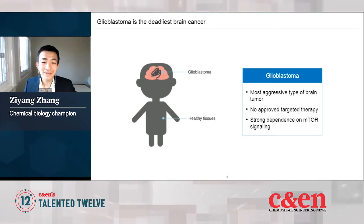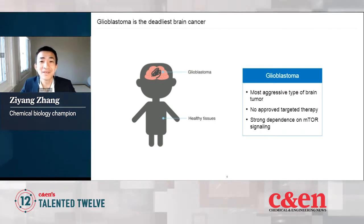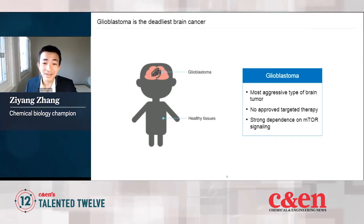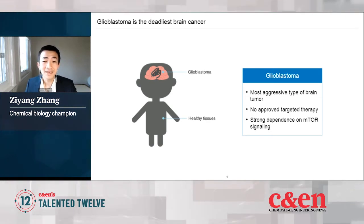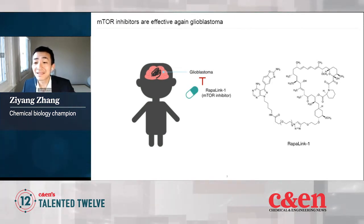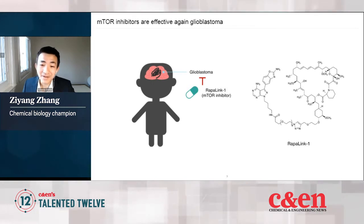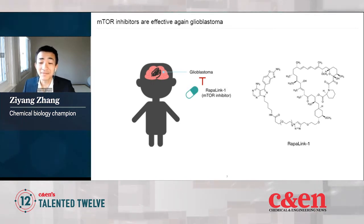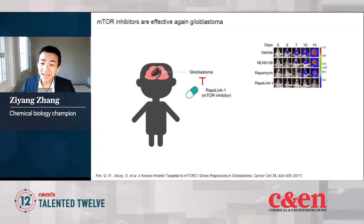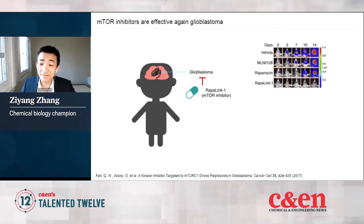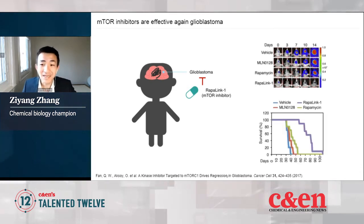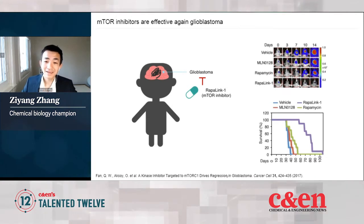Recent research has shown that these tumor cells are very dependent on a particular signaling pathway called the mTOR pathway. So it makes sense to find a drug to target this vulnerability and stop the tumor cells from growing. In fact, this molecule called Rapalink-1 — slightly scary-looking as a chemical — is a very good inhibitor of the mTOR protein. In animal models, Rapalink-1 can reverse tumor growth and greatly extend the lifespan of mice bearing these tumors.